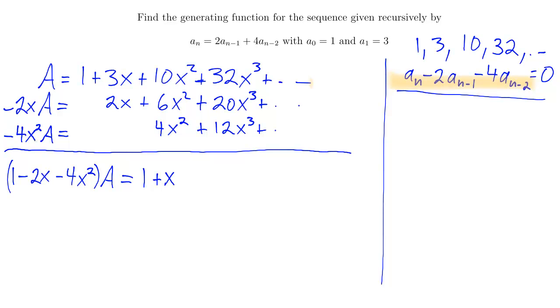Well of course it is, that's the way I set it up. Using this recurrence relation over here, if I take any term, subtract 2 of the previous ones, and 4 of the ones before that, I should get 0. So all of these would be plus 0, out forever.